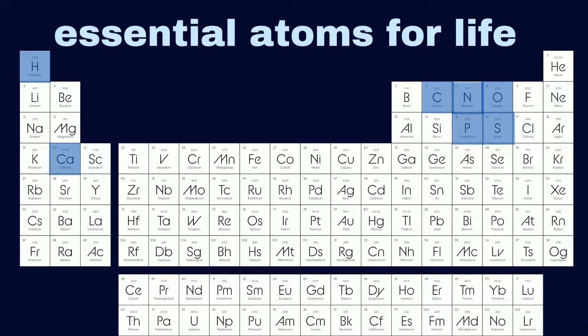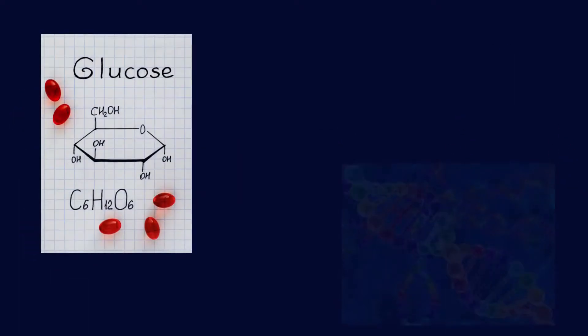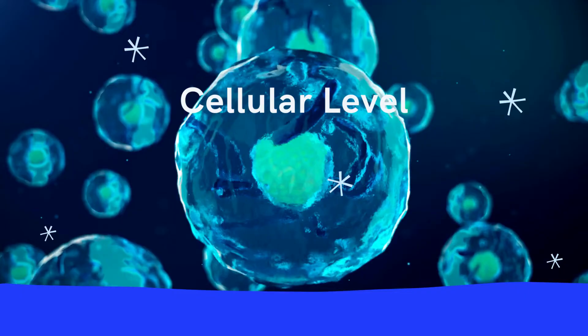carbon, hydrogen, oxygen, nitrogen, phosphorus, calcium, and sulfur. When two or more atoms join together, they make a molecule, such as the glucose molecule or the DNA molecule.